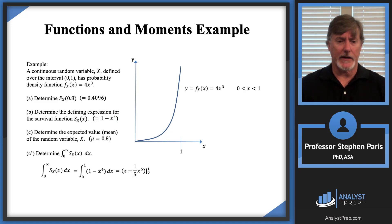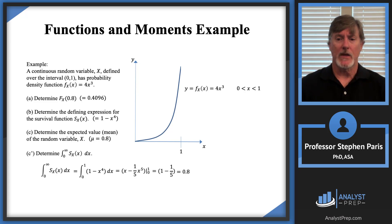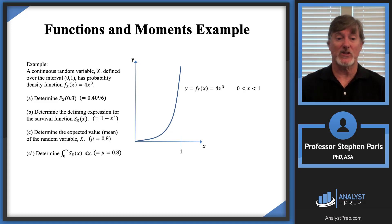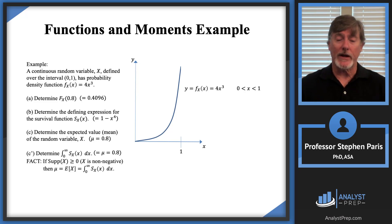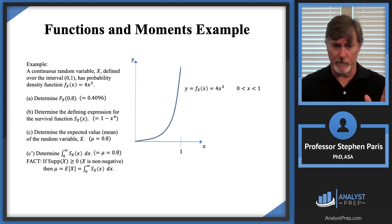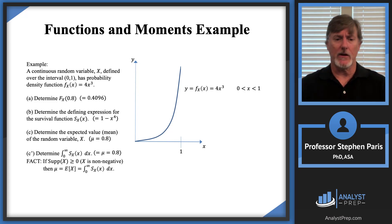Integrating 1 - x⁴ from 0 to 1: the antiderivative is x - (1/5)x⁵. Evaluated from 0 to 1: plugging in 1 gives 1 - 1/5 = 4/5; plugging in 0 gives 0. So the result is 4/5 = 0.8. When I integrate the survival function, I actually get the mean of the random variable — the same answer as before. That's not a coincidence. If the random variable is non-negative (i.e., the support is ≥ 0), then the mean can be calculated either directly or by integrating the survival function. That's a useful fact we'll likely see again.